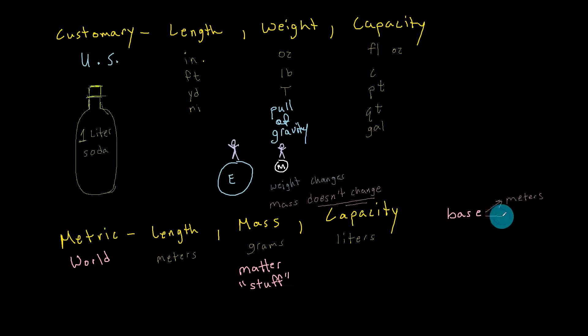But if we were to measure the mass of objects, our base unit would be in grams. And if we were to switch to capacity, our base unit would be in liters.